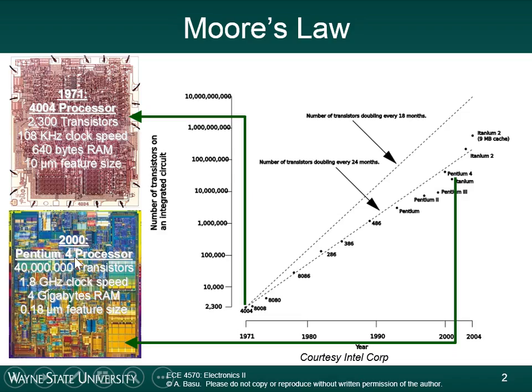10 micrometers is still pretty small. If you were to take the average human hair and look at the diameter, the thickness is usually about 100 micrometers. So if you take one-tenth the diameter of your hair, that's how big one of the field effect transistors were back in the 70s.